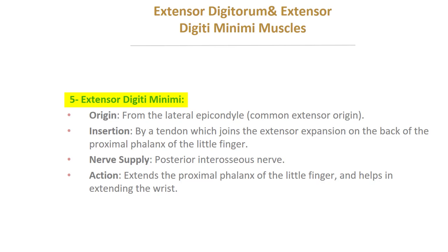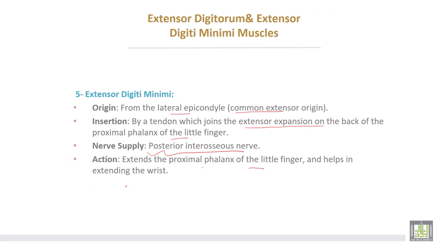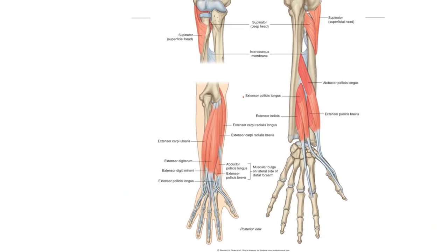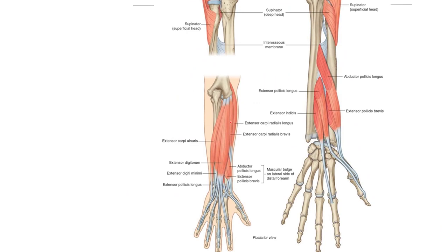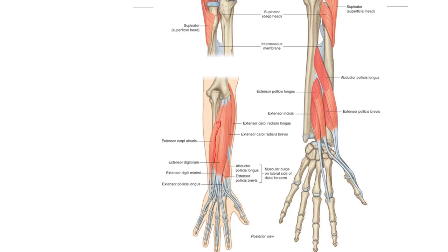Extensor digiti minimi takes origin from the lateral epicondyle, common extensor origin; insertion by a tendon which joins the extensor expansion on the back of the proximal phalanx of the little finger. Nerve supply from the posterior interosseous nerve. Action: extends the proximal phalanx of the little finger and helps in extending the wrist. This is extensor carpi radialis longus and brevis, this is extensor digitorum, and this is extensor digiti minimi.